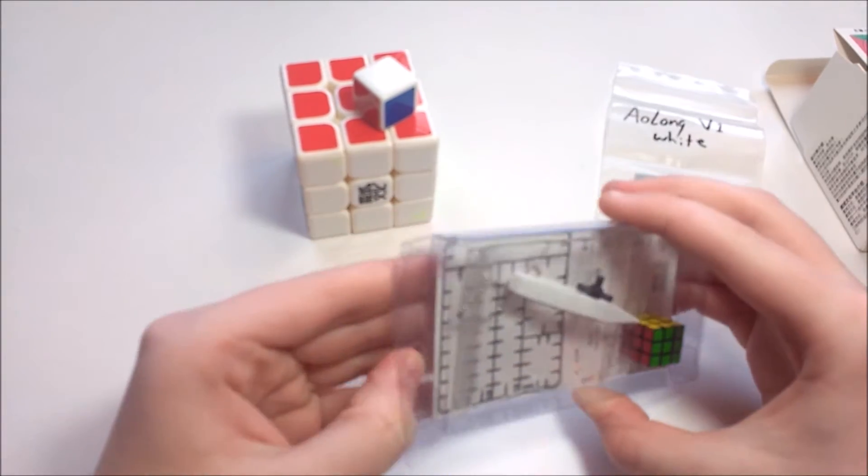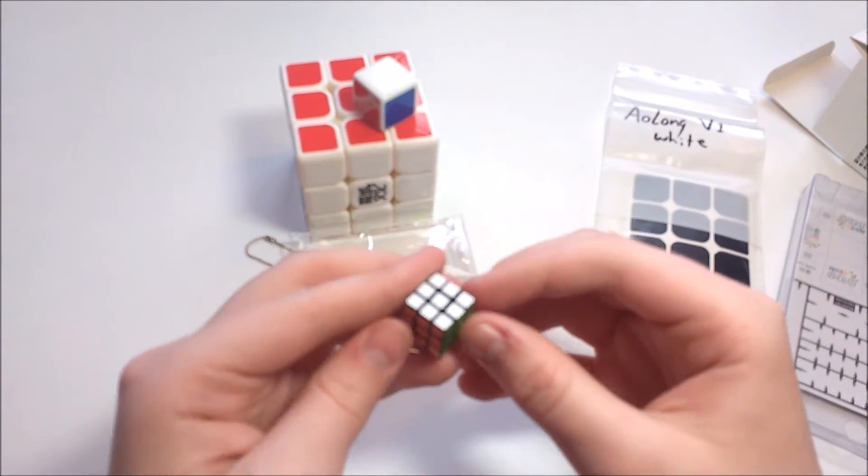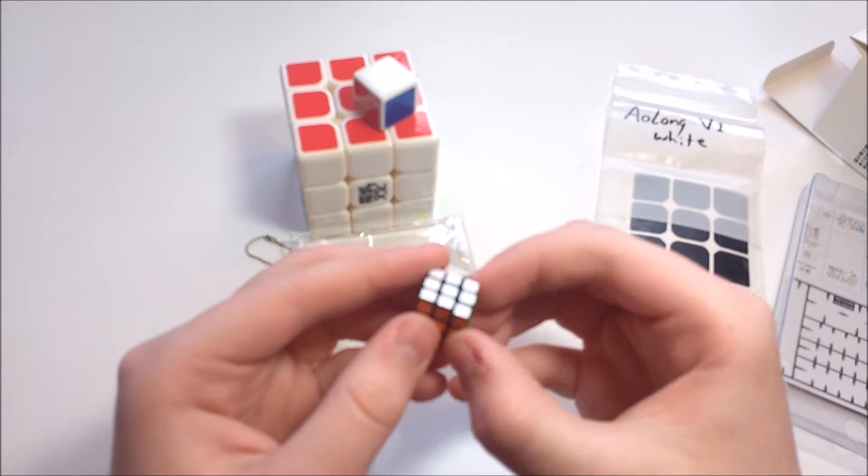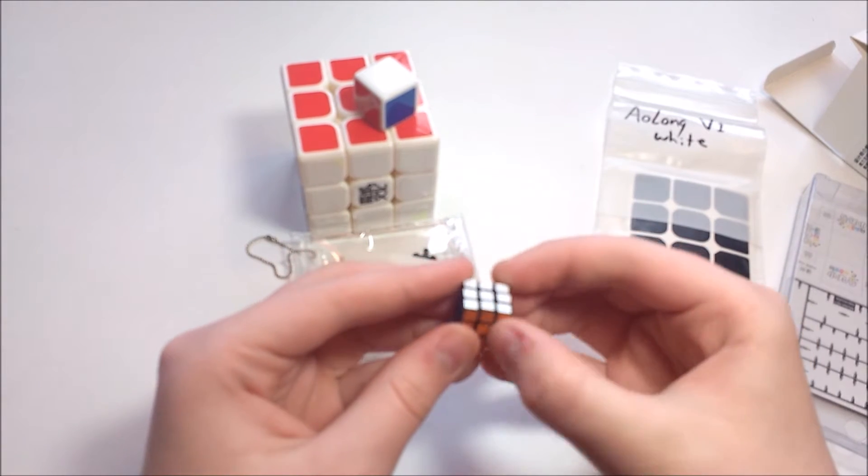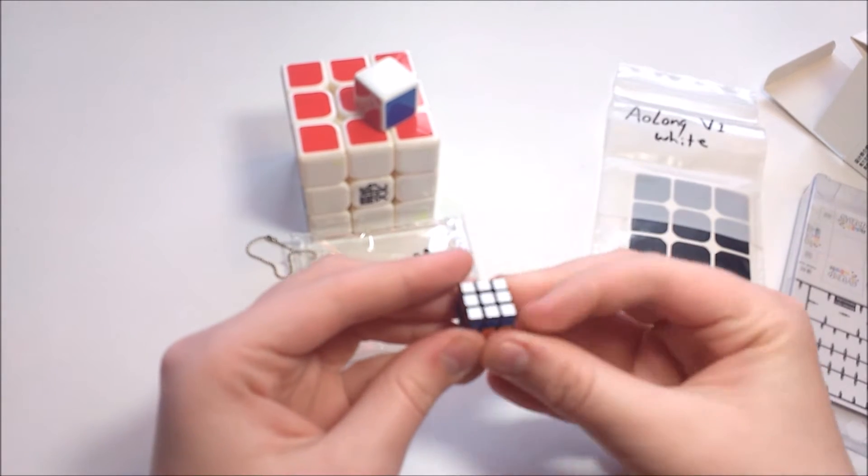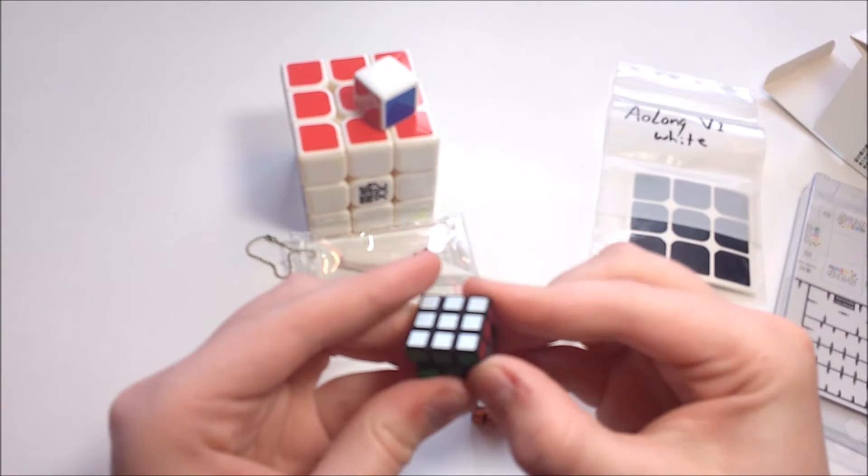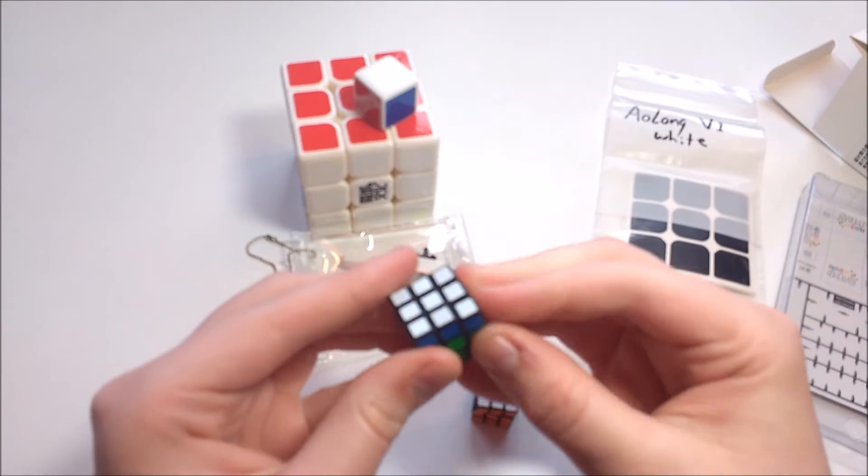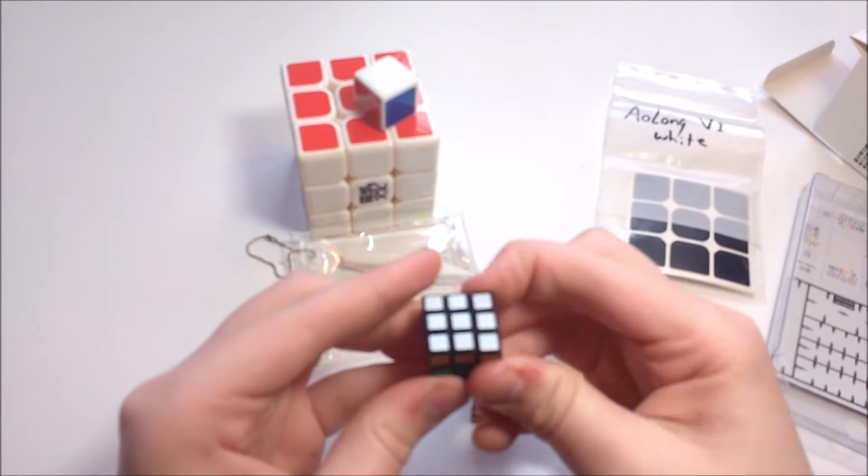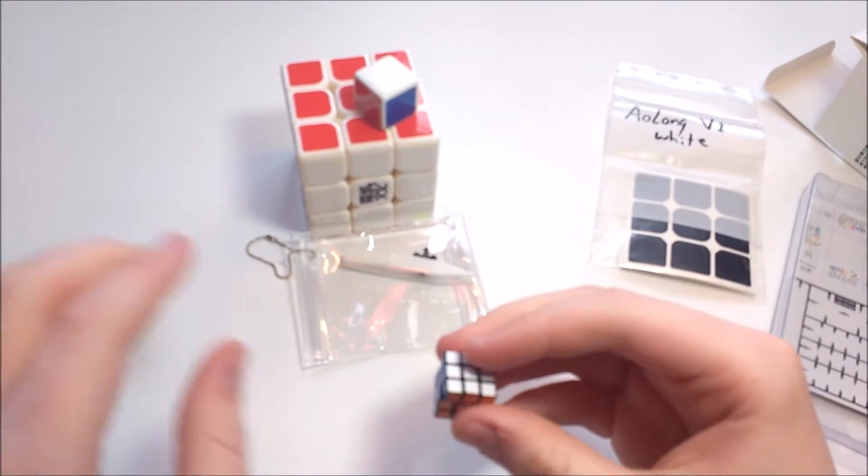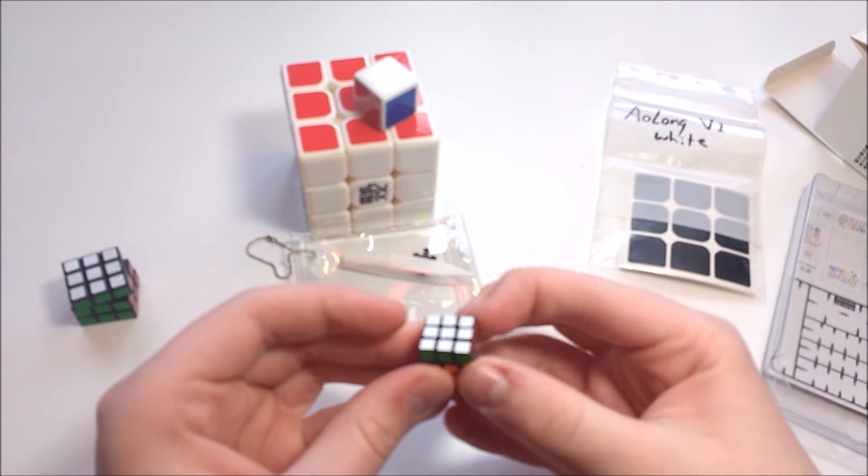And finally, the Maru Nano Cube. It actually seems to be stickered pretty well. Turning is definitely much better than my 20mm Rubik's brand, which is very stiff. This is actually finger-trickable.